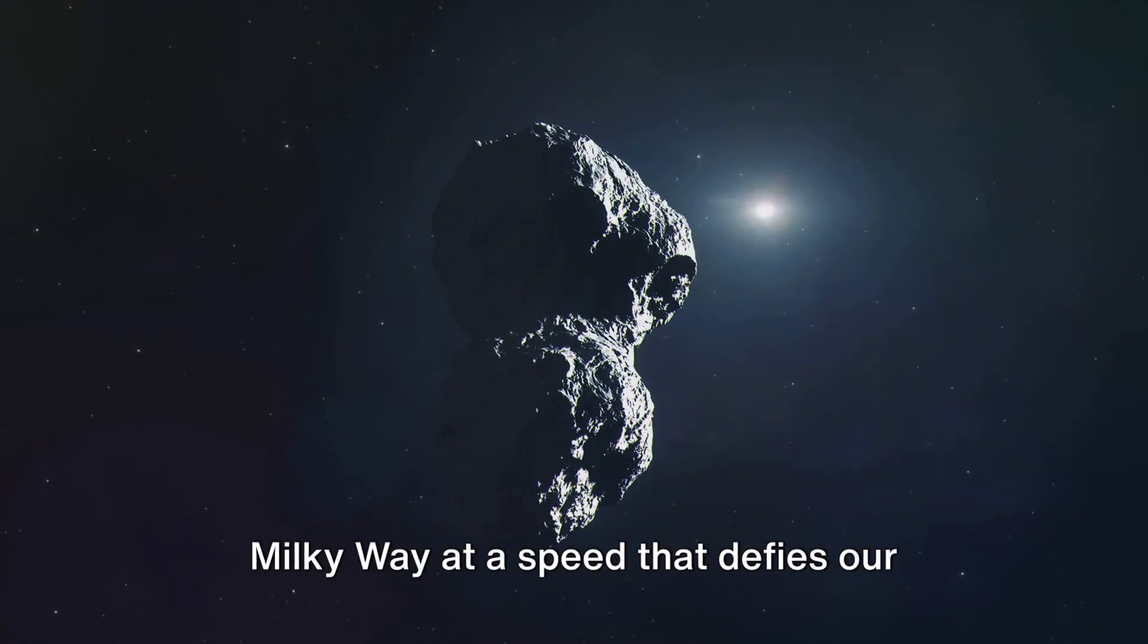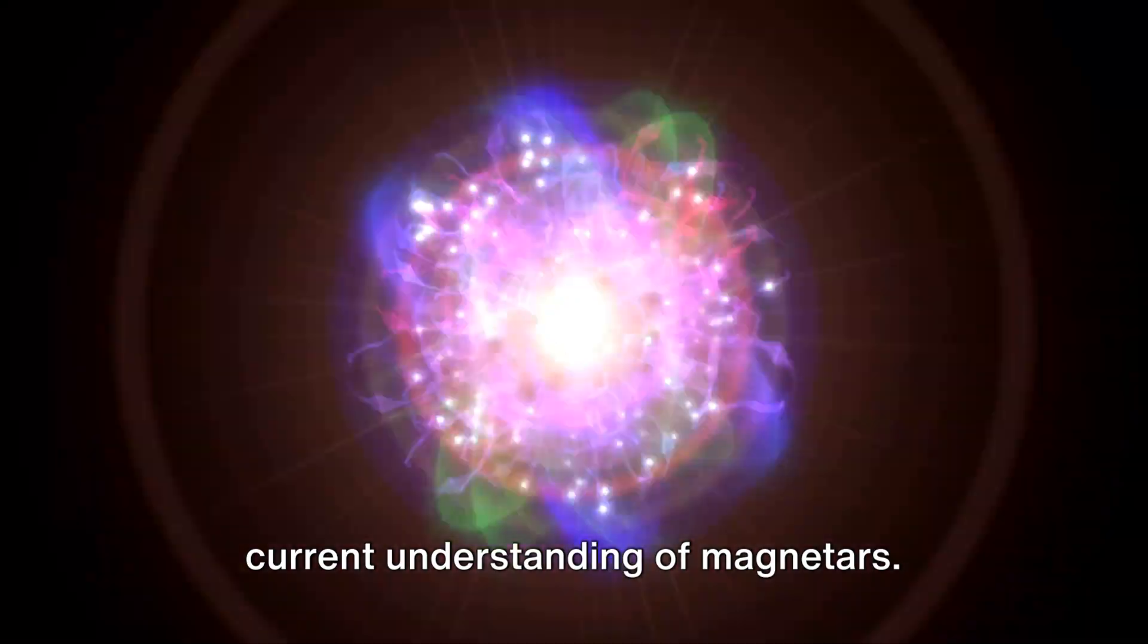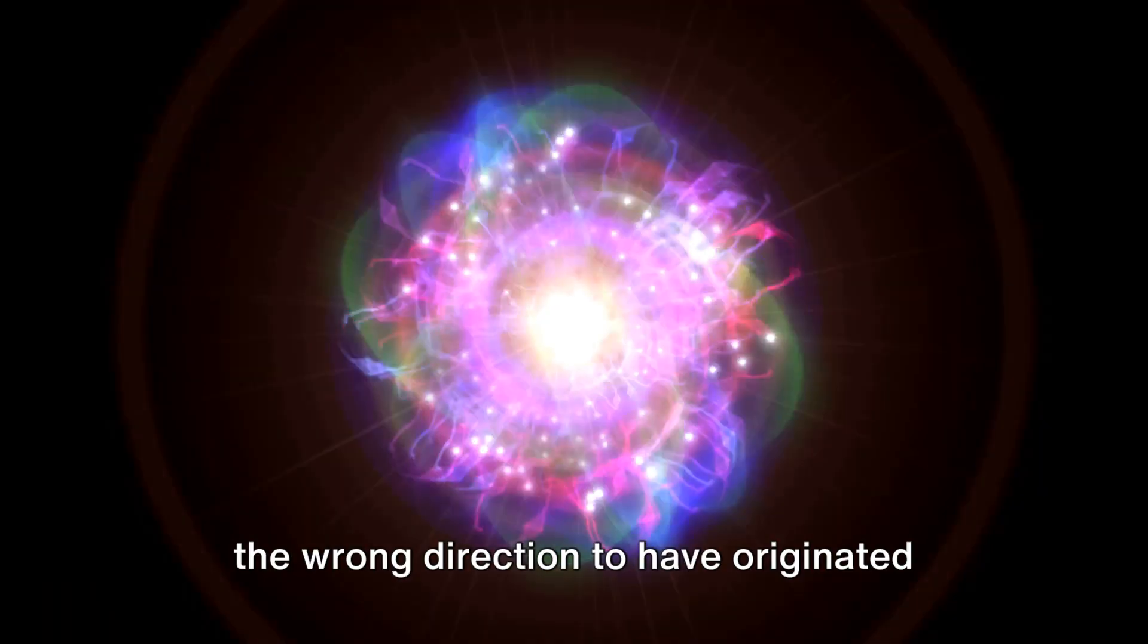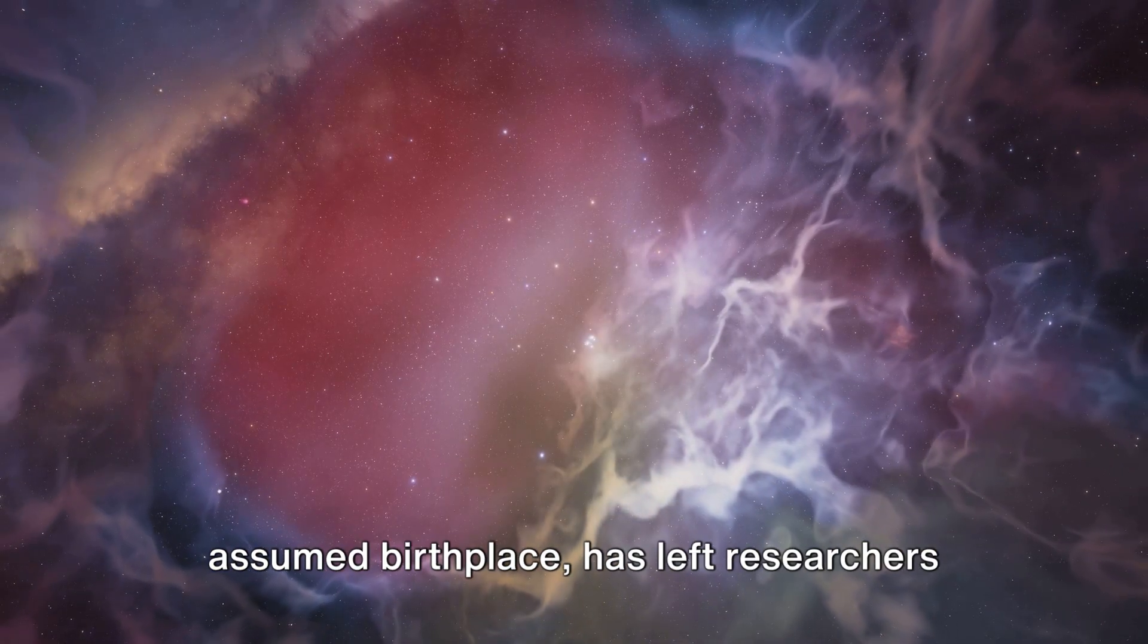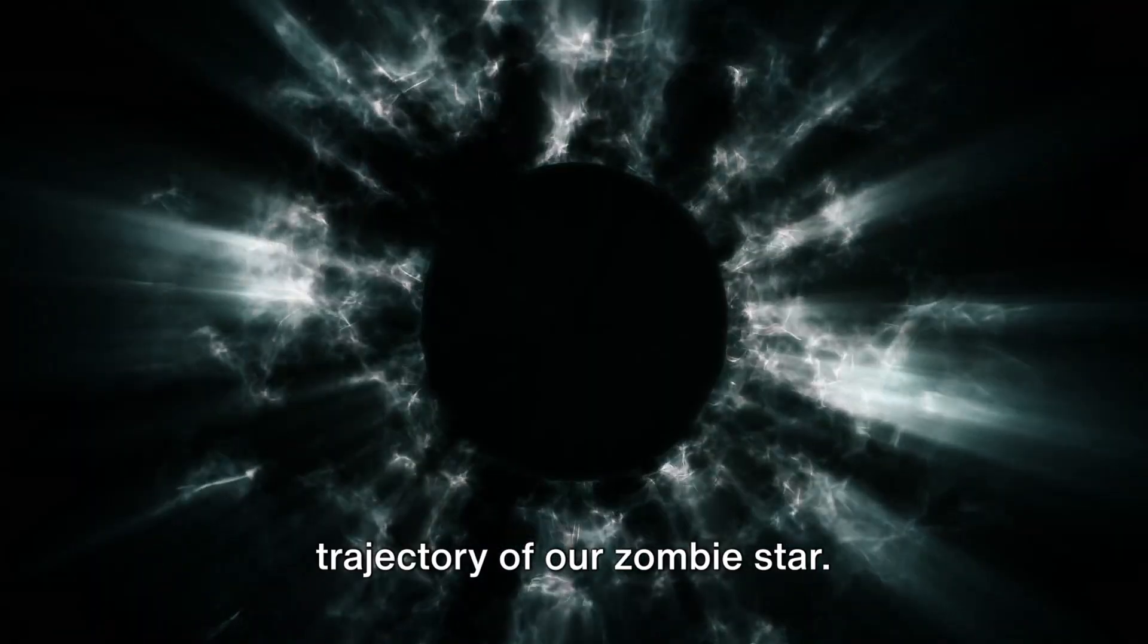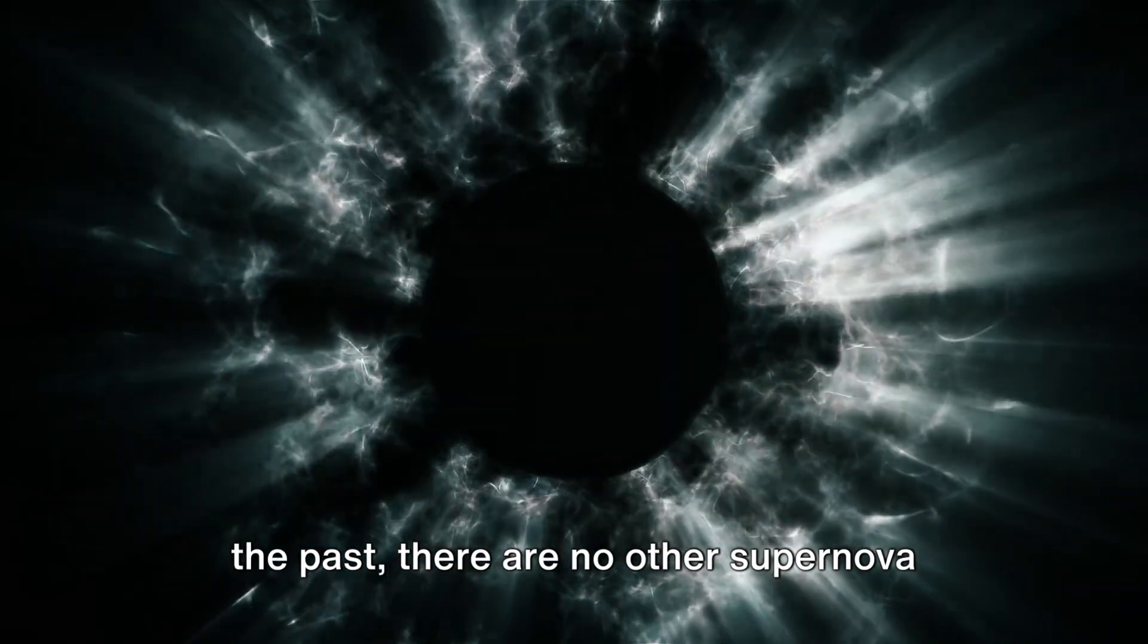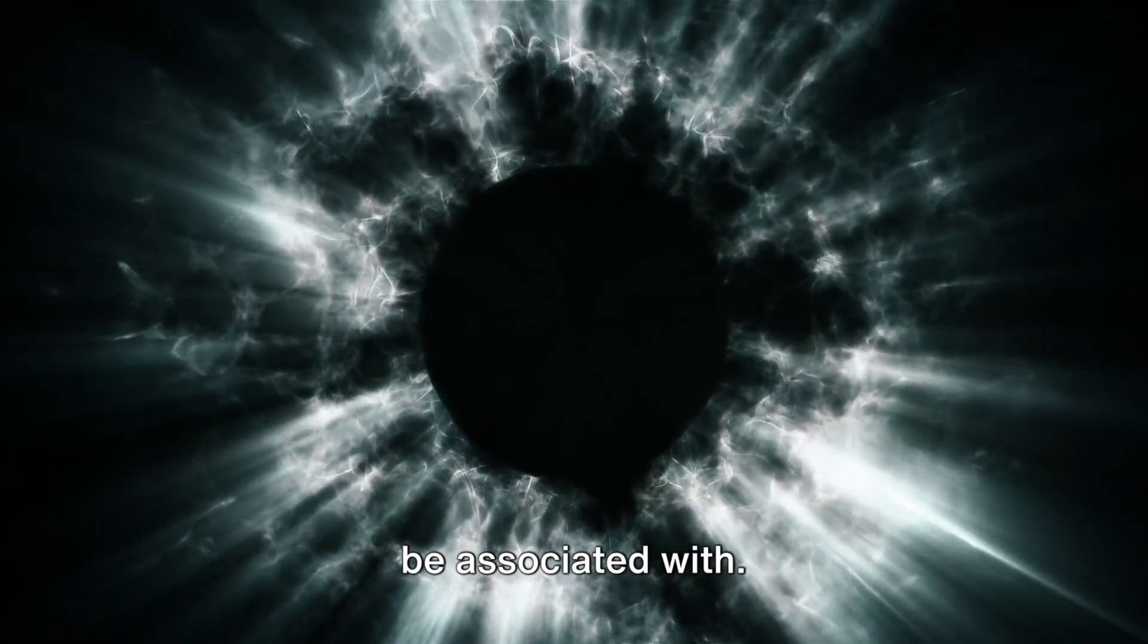At a speed that defies our current understanding of magnetars. The fact that it's moving too fast and in the wrong direction to have originated from the supernova remnant HB9, its assumed birthplace, has left researchers scratching their heads. The mystery deepens when we consider the trajectory of our zombie star. Tracing its path thousands of years into the past, there are no other supernova remnants or massive star clusters it could be associated with.